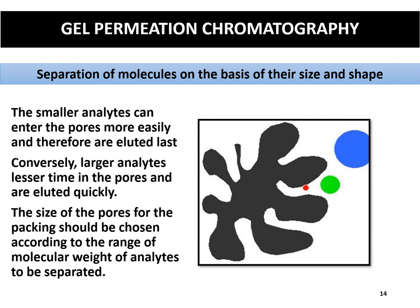In gel permeation chromatography, molecules are separated on the basis of their size and shape. The smaller analytes can enter the pores more easily and are eluted last. Conversely, larger analytes spend lesser time in the pores and are eluted quickly. The size of the pores for the packing should be chosen according to the range of the molecular weight of analytes to be separated. The gel materials generally used for this technique are cross-linked dextrans, agarose, polyacrylamide, and polystyrene.